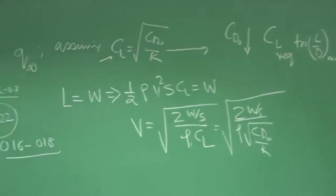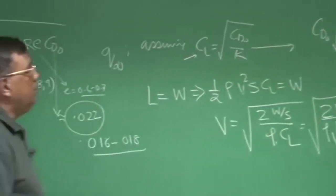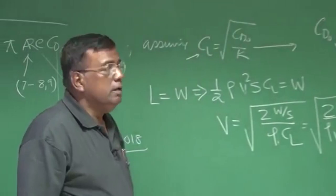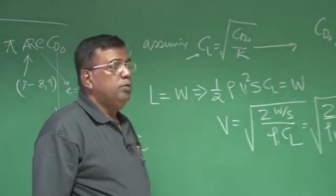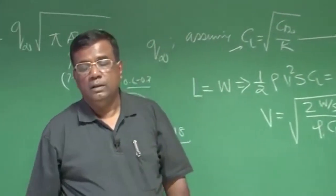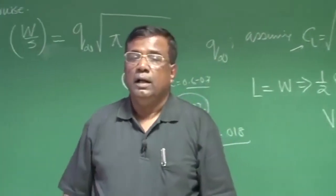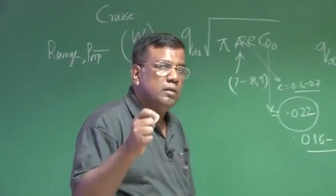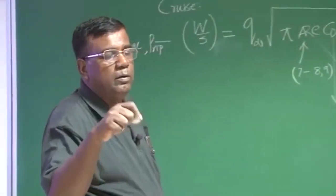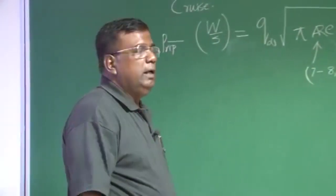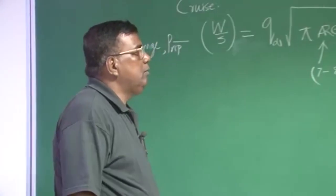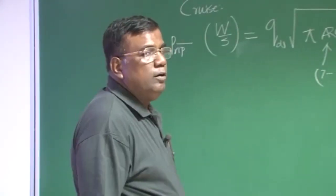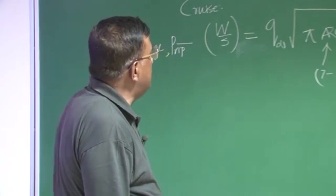If you reduce CD0, then the CL required for L/D max also goes down. If CL requirement goes down, that means for the given aerofoil you are flying at a lower angle of attack. If CL has reduced, you can fly at higher speeds at the same altitude — that is how you satisfy both the speed and the range requirement. However, if you go on reducing CD0 theoretically, the phugoid mode may get unnecessarily more excited. We will come back to that when talking about stability and handling requirements.